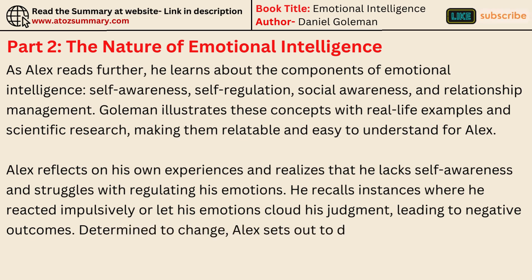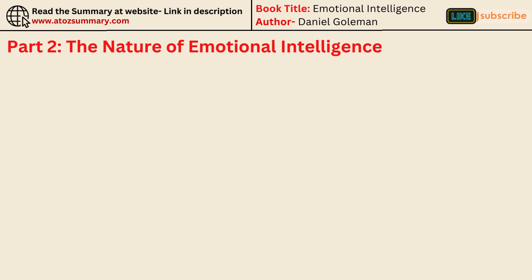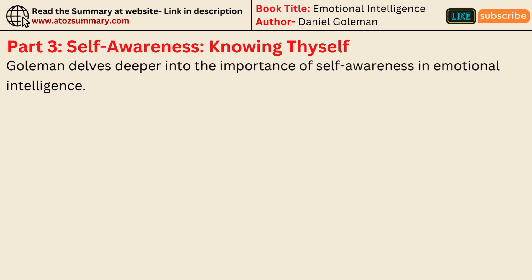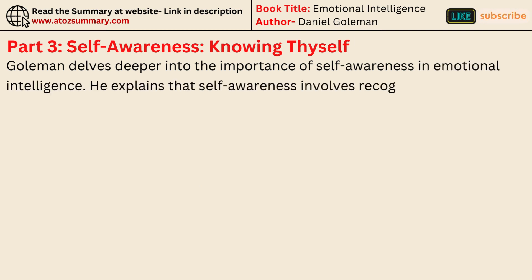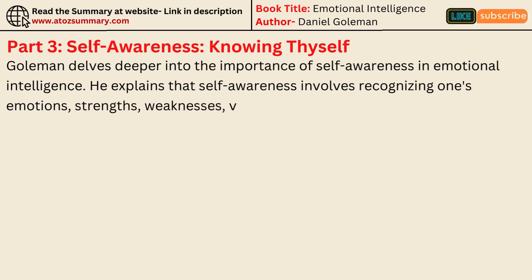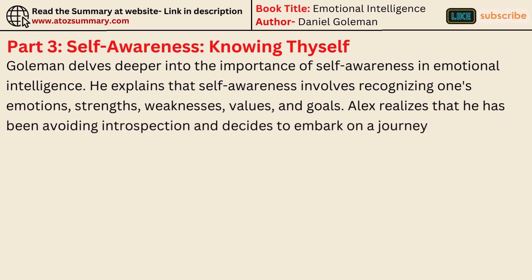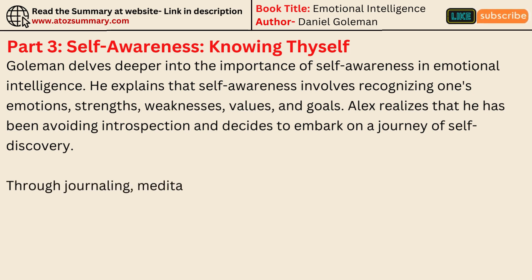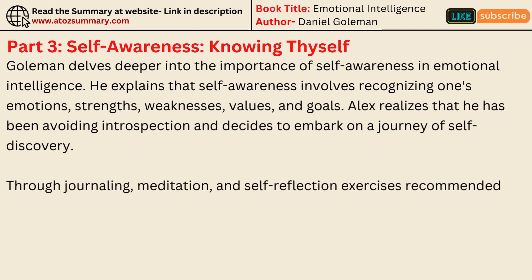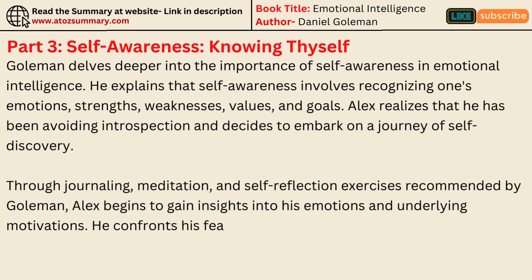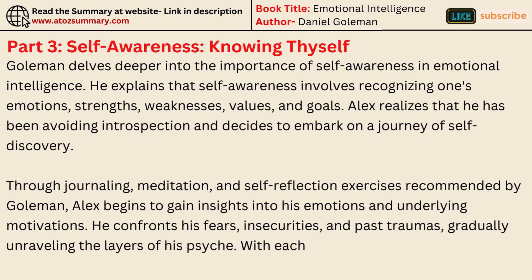Determined to change, Alex sets out to develop his emotional intelligence skills. Goleman delves deeper into the importance of self-awareness, explaining that it involves recognizing one's emotions, strengths, weaknesses, values, and goals. Alex realizes that he has been avoiding introspection and decides to embark on a journey of self-discovery. Through journaling, meditation, and self-reflection exercises recommended by Goleman, Alex begins to gain insights into his emotions and underlying motivations. He confronts his fears, insecurities, and past traumas, gradually unraveling the layers of his psyche. With each revelation, Alex feels a sense of liberation and clarity.